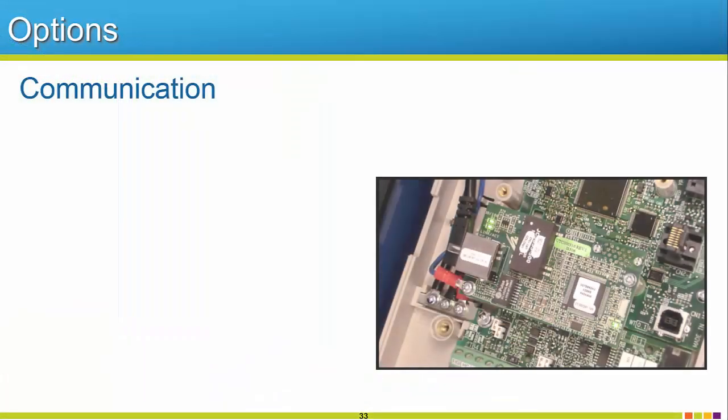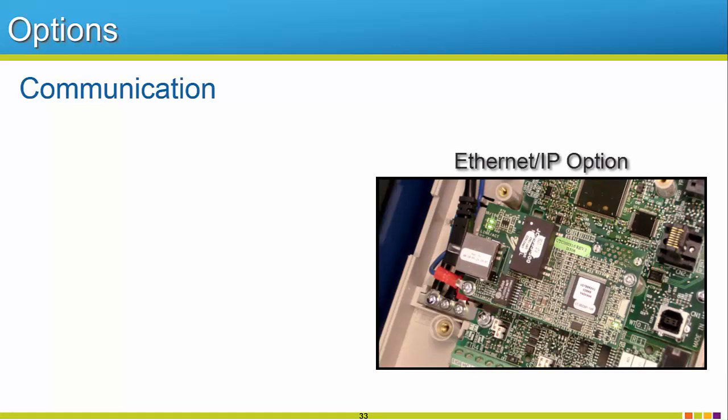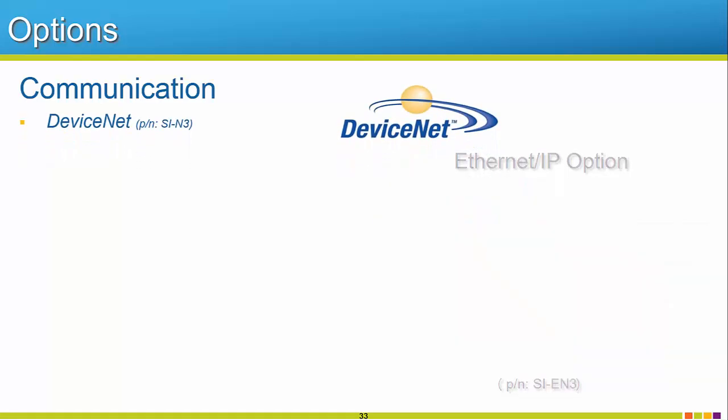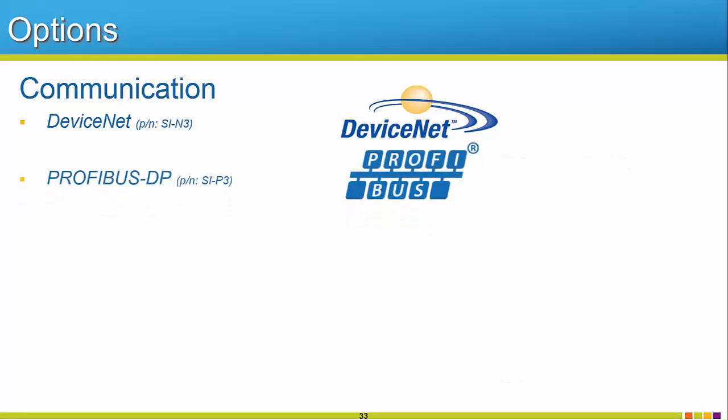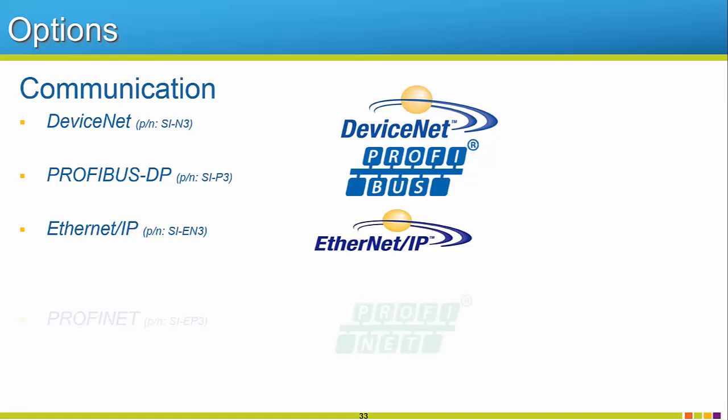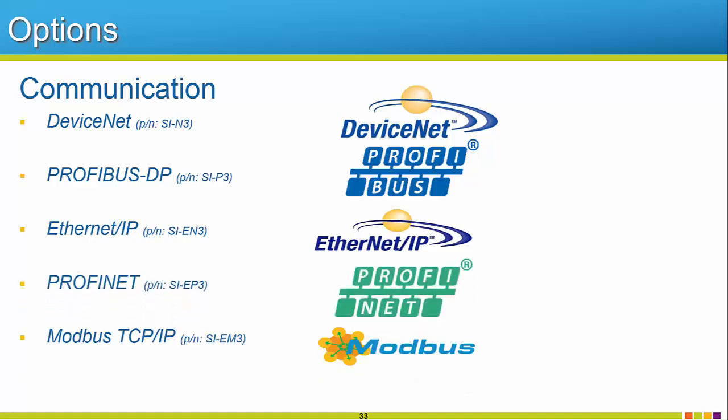The R1000 features many options as far as network communication protocols. These options will enable the R1000 to connect and interface to an industrial network for control and or monitoring. The available options are DeviceNet, Profibus, Ethernet IP, ProfiNet, Modbus TCP IP, and the unit's native protocol Modbus RTU, which does not require an option card.